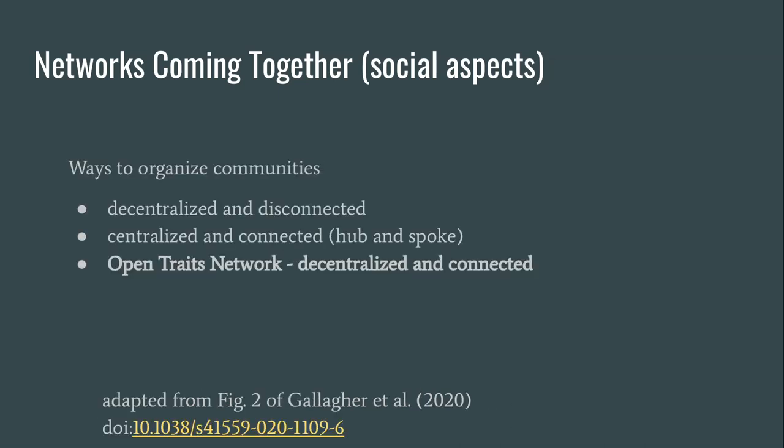There are several ways to organize communities. One could be decentralized and disconnected, which is how most research groups interact in a certain field. Then they can be centralized and connected, which is how individual research institutions typically are organized. And then you can have mixed models where you're decentralized but also strongly connected — that is what the Open Trades Network is trying to achieve. Since the relevant figure is not openly licensed, we didn't include it here because we wanted to make the presentation open.